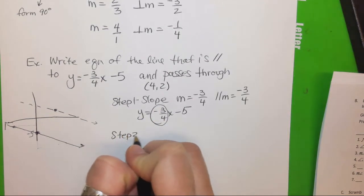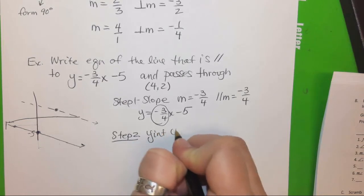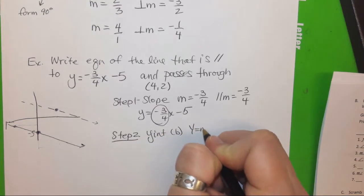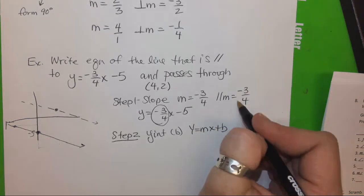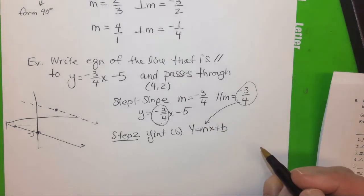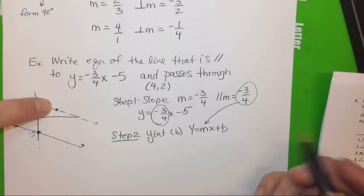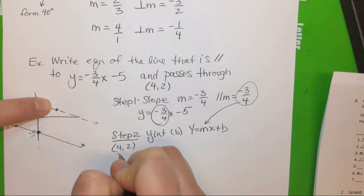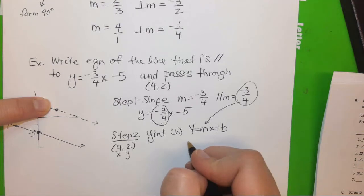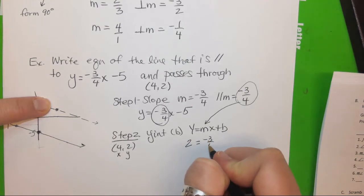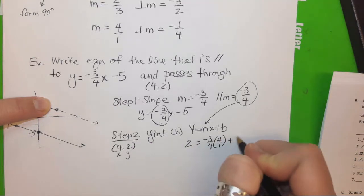Okay? Step two. Find b or your y-intercept. So we have y equals mx plus b. Well, what is our m? Negative three-fourths. What is your x? Now this is where we need to use the other point because we want it to go through four-two. So x is four, y is two. So we'd have two equals negative three-fourths times four plus b.